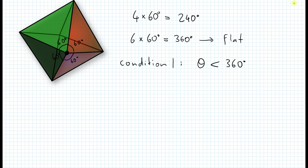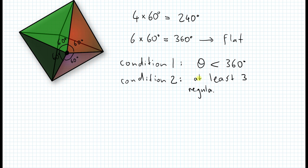A second condition: how many regular polygons do you have to have at a vertex at least to make an enclosed figure? The answer is 3 — because if you have only two, you cannot really make an enclosed figure. So condition 2 is: at least 3 regular polygons must meet at a vertex.